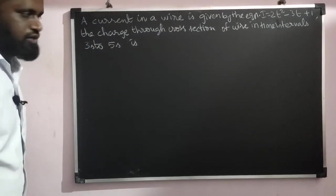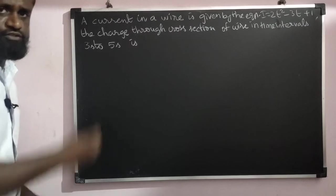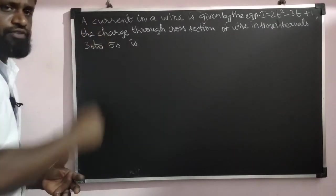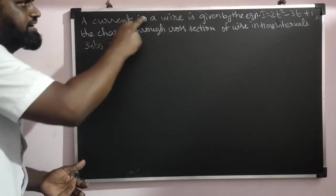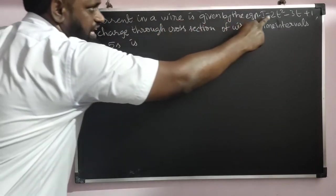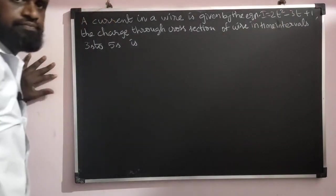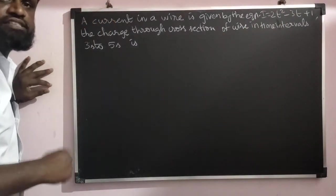Hello everybody, today's question asked through WhatsApp is from current electricity. A current in a wire is given by the equation i = 2t² - 3t + 1. The current is given in the form of an equation.